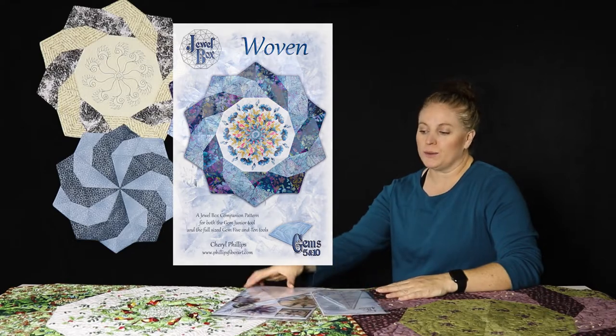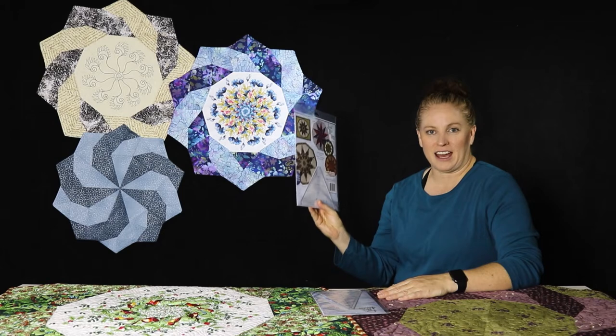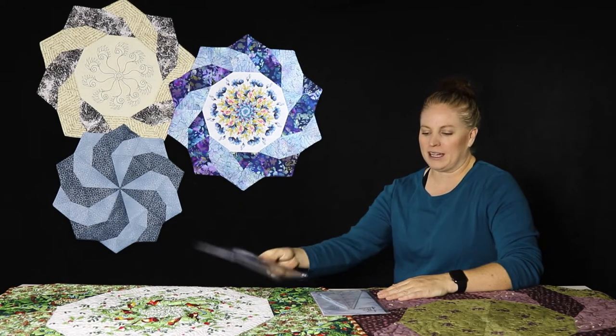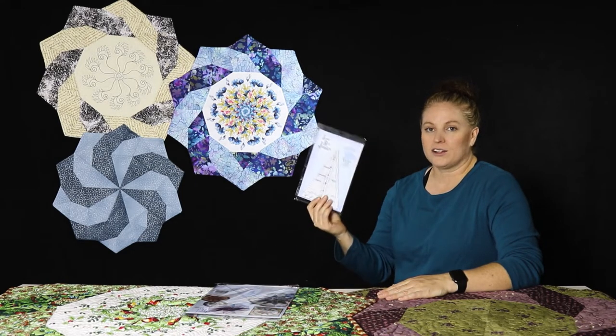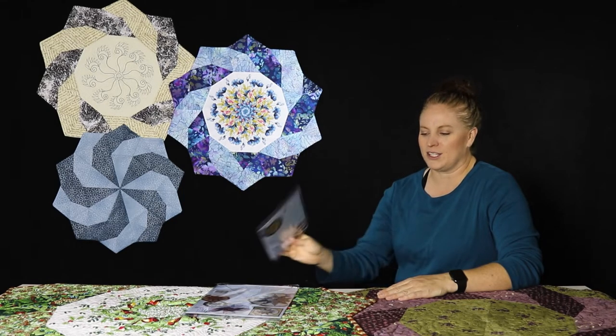Woven uses our Jewel Box Gem Tools, the 10 and 5, which are coming in one package, or our Jewel Box Junior. It has the 10 and the 5 built into one tool, makes it a lot of fun to use.